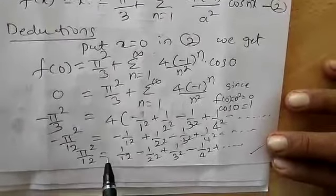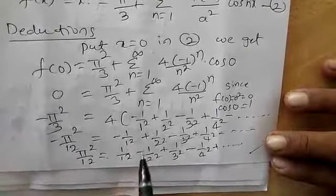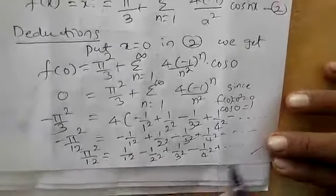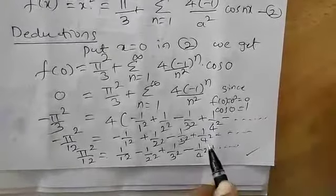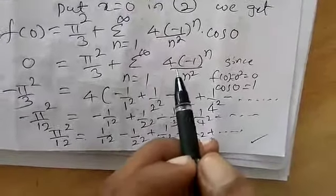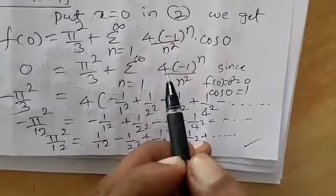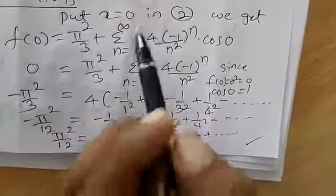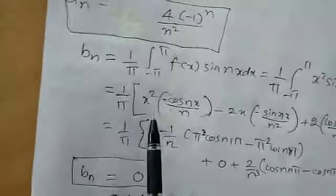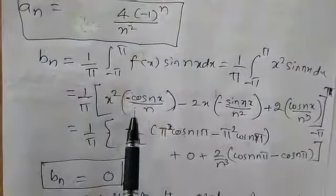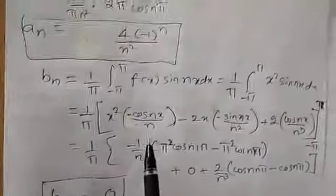Multiplying through by minus one changes all signs, giving the final result: π²/12 = 1/1² − 1/2² + 1/3² − 1/4² + ... This is the required solution. The bₙ = 0 result is consistent since x² is an even function, confirming the derivation is complete.